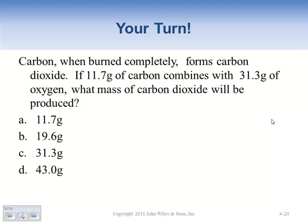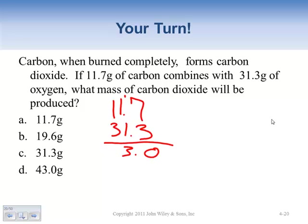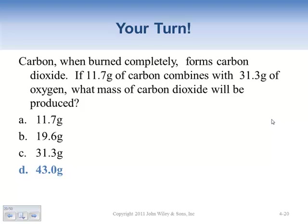Looking at this problem: when carbon is burned completely it forms carbon dioxide. If 11.7 grams of carbon combined with 31.3 grams of oxygen, what is the mass of carbon dioxide produced? By the law of conservation of mass, the mass of the product equals the sum of the reactants: 11.7 + 31.3 = 43.0 grams, because the law of conservation says the two sides must be equal.